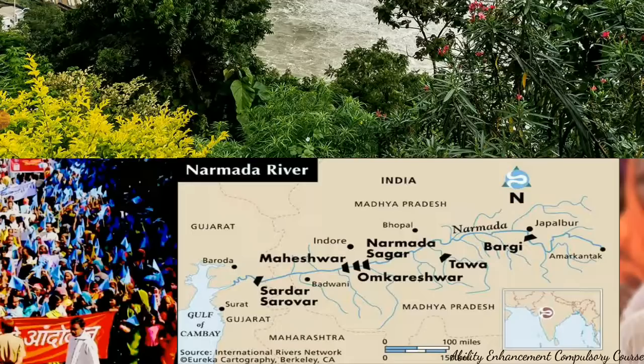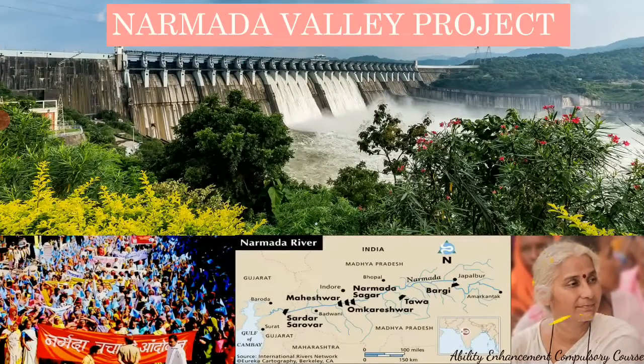The Narmada Valley project started back in 1985, though the foundation stone was laid much earlier by Pandit Jawaharlal Nehru. Construction began in 1985 but was completed only recently in 2017 because the dam garnered a lot of controversy since the 1980s. Leading this controversy was an environmentalist named Medha Patkar, along with other celebrities, environmentalists, conservationists, and social workers.